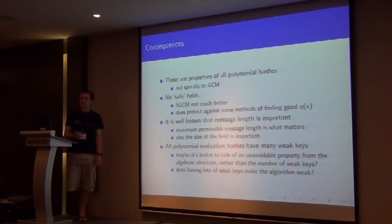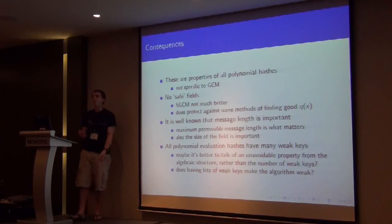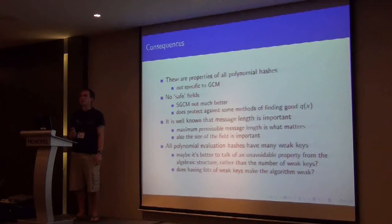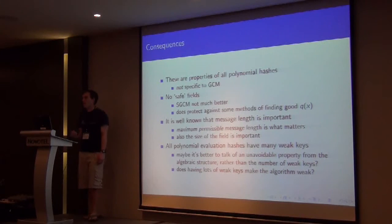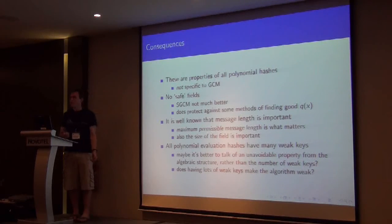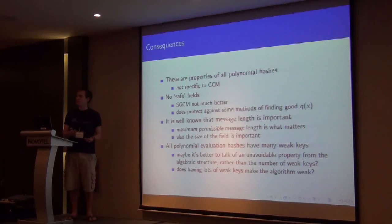I think it's fairly well known that maximum message length is important for these constructions. And what we've sort of demonstrated has been confirmed, because it is in the original papers, is that the maximum message length is what really matters. And the size of the field, those are the two things that show in the forgery probability. All of the polynomial evaluation hashes have lots and lots of weak keys. Maybe it's better to talk about this as an unavoidable property that comes from the construction, rather than just counting the weak key classes.